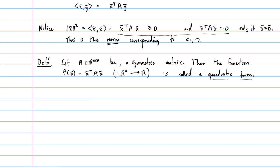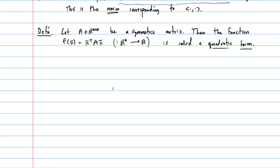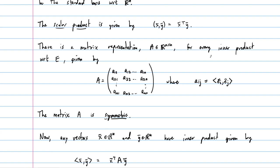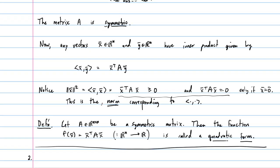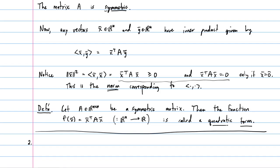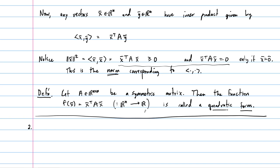Let's take a slightly different approach to the same definition and define a quadratic form in a slightly different way. What I've done is start with the idea of an inner product, written the norm, and compared it with a more general definition of a quadratic form. Now let's zoom in to two-dimensional space R^2 and look at a quadratic equation in two variables.